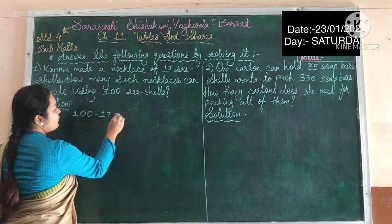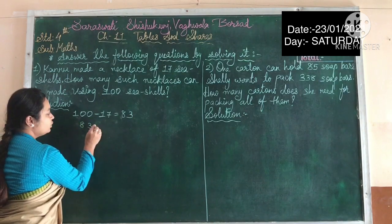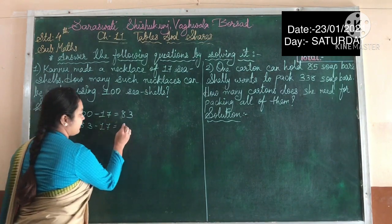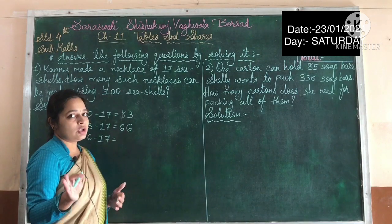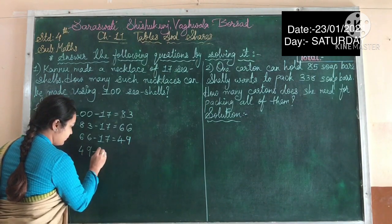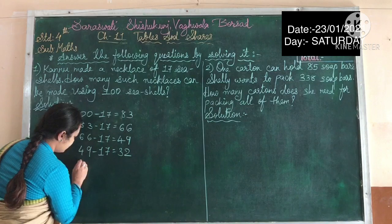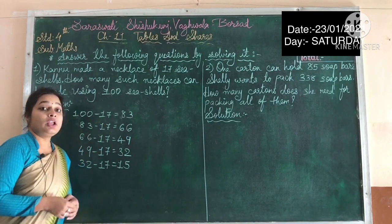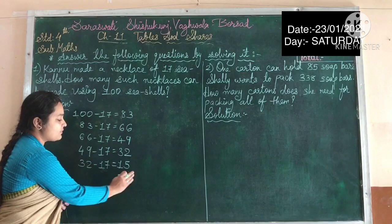So we know that 100 minus 17 gives us 83. After that take this 83, again minus 17 — he is making another necklace — it remains 66. Now take 66, subtract again with 17, you will get 49. Now take this 49 and subtract with 17, you get 32. Again take 32, subtract with 17, at last we have 15. If you see, 15 is less than 17, so we cannot subtract anymore, so we keep 15 as it is.